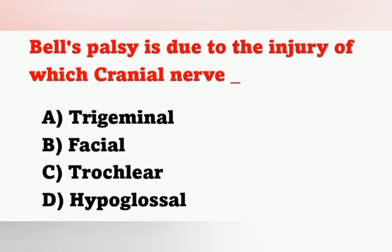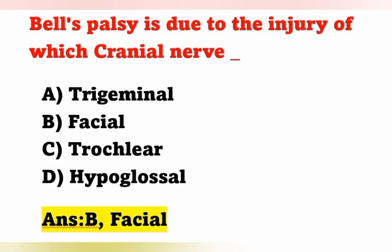Next question: Bell's palsy is due to the injury of which cranial nerve? Option A: Trigeminal nerve; Option B: Facial nerve; Option C: Trochlear nerve; Option D: Hypoglossal nerve. Bell's palsy, or facial paralysis, occurs due to injury of the 7th cranial nerve, which is the facial nerve. Option B is the correct answer.